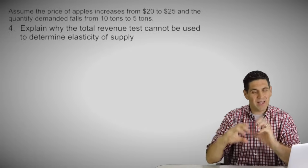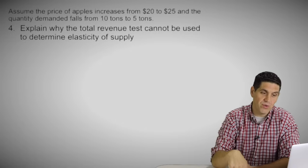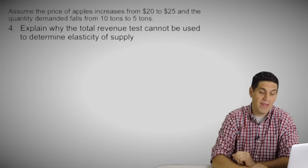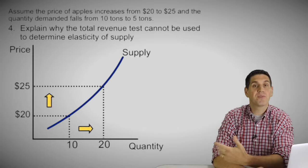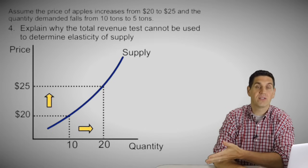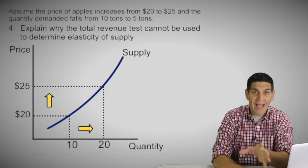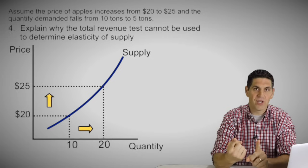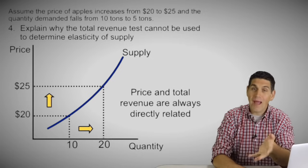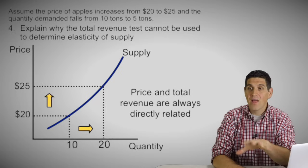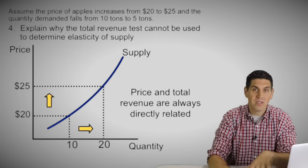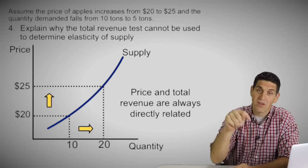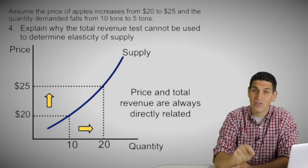In question number four, I'm clarifying an important concept: you cannot use the total revenue test to figure out the elasticity of supply. When the price goes up from 20 to 25, the quantity increases, so total revenue always goes up. When the price goes down, total revenue goes down. Price and total revenue are directly related for supply — they will always go up or down together. So the total revenue test works for demand, but you cannot use it for supply.